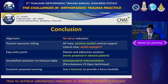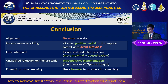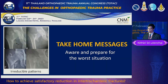In conclusion, to achieve satisfactory reduction: avoid varus reduction and prevent excessive sliding; use a more proximal entry point in obese patients; correct unsatisfactory reduction with instrumentation; use the hammer when performing proximal reaming; and be aware of and prepare for irreducible fracture patterns. Thank you.